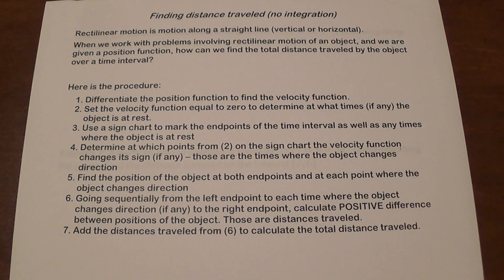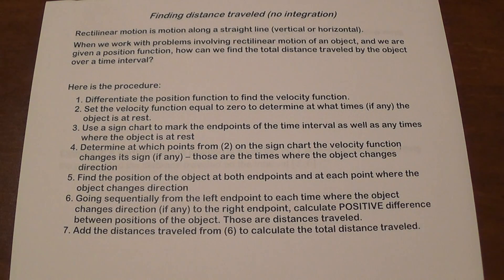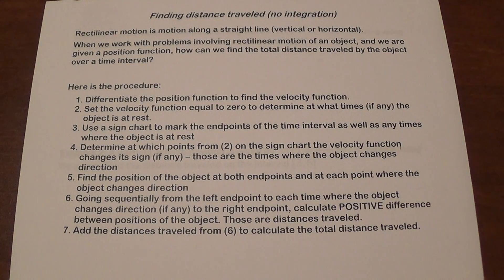We are going to talk about how to find the distance traveled by an object that's moving along a straight line, either vertical or horizontal. This is something that we call rectilinear motion.